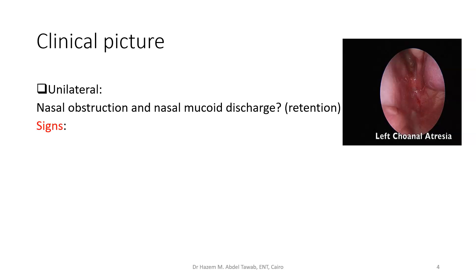Signs — what you find by examination. First is failure to do the fog test. We place a tongue depressor or small mirror in front of the nostrils and see if there is fogging. If you have fogging on one side and not the other, that side mostly has choanal atresia. However, do not depend on the fog test alone, because hypertrophied inferior turbinates, mucosal problems, or deviated nasal septum can also cause decreased or absent fogging on one side. It helps you to suspect, but it is not the full diagnosis.